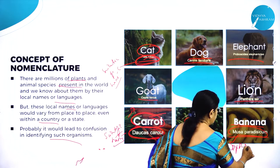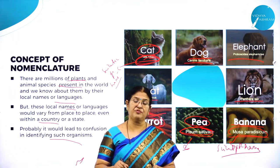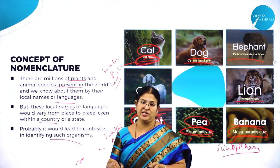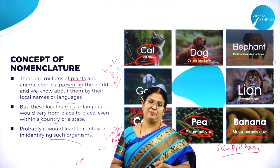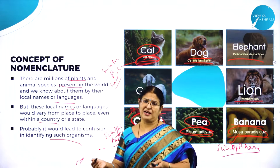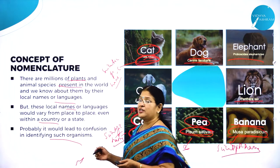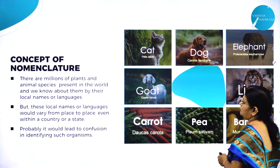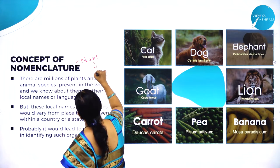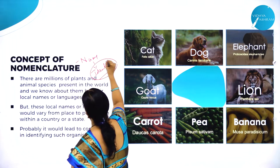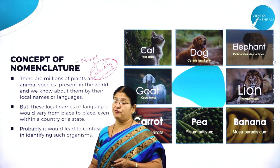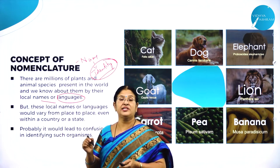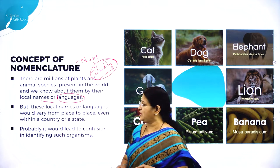Common names are given for our convenience and means of communication, which may also cause confusion. If you go to some other place and use the same local language, people may not understand because according to their language it means something different. But scientific names will not cause any confusion and are universal.